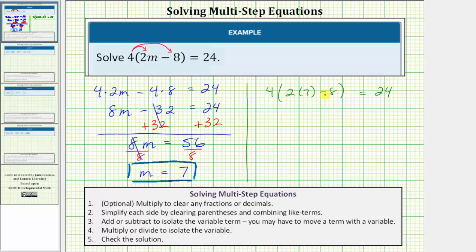Simplifying inside the parentheses first, we multiply two times seven is fourteen. So we have four times the quantity fourteen minus eight equals twenty-four. Still simplifying inside the parentheses, fourteen minus eight is six, so we have four times six equals twenty-four.